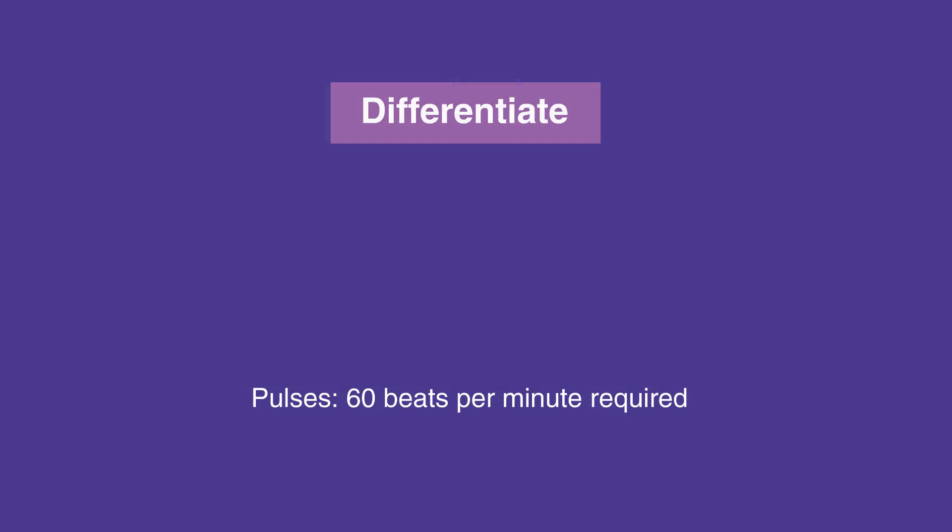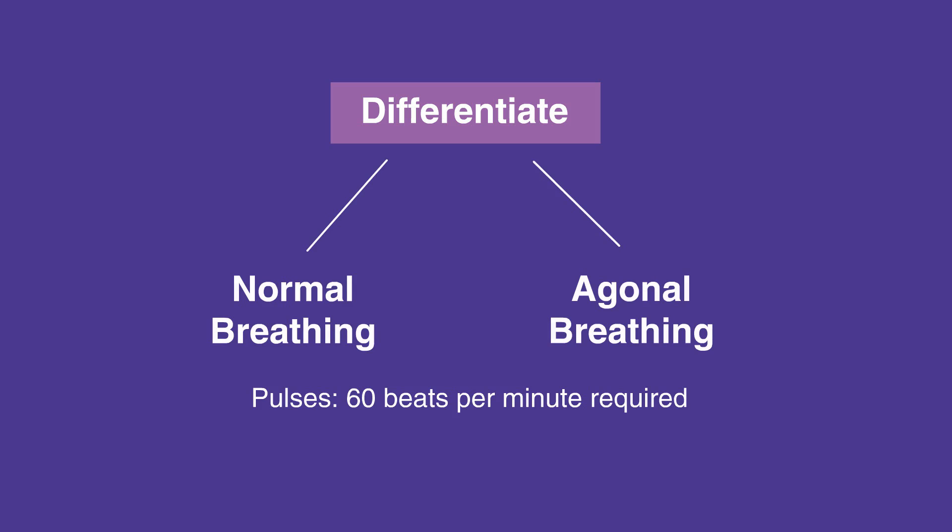It's important to differentiate normal breathing from gasping or agonal breathing. Gasping is considered ineffective breathing. Similarly, not all pulses are adequate. The rule of thumb is that at least 60 beats per minute is required to maintain adequate perfusion in a child or infant.